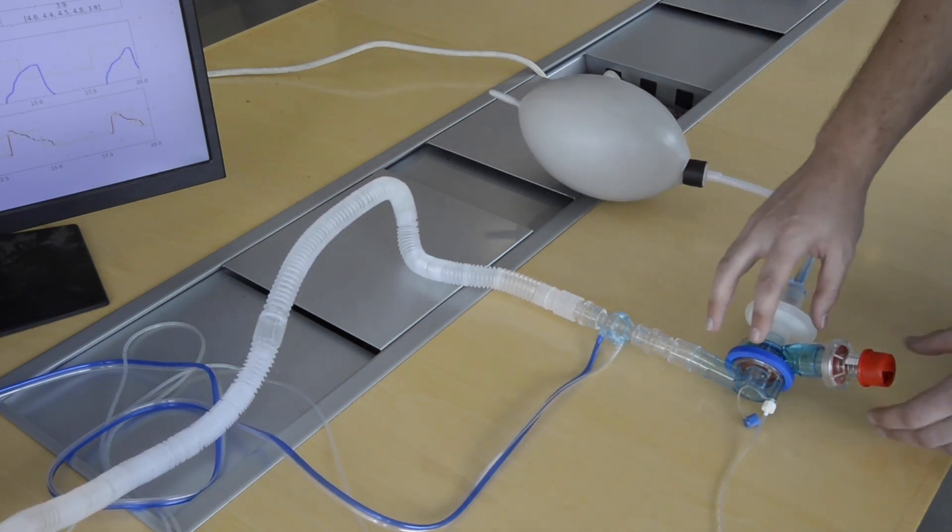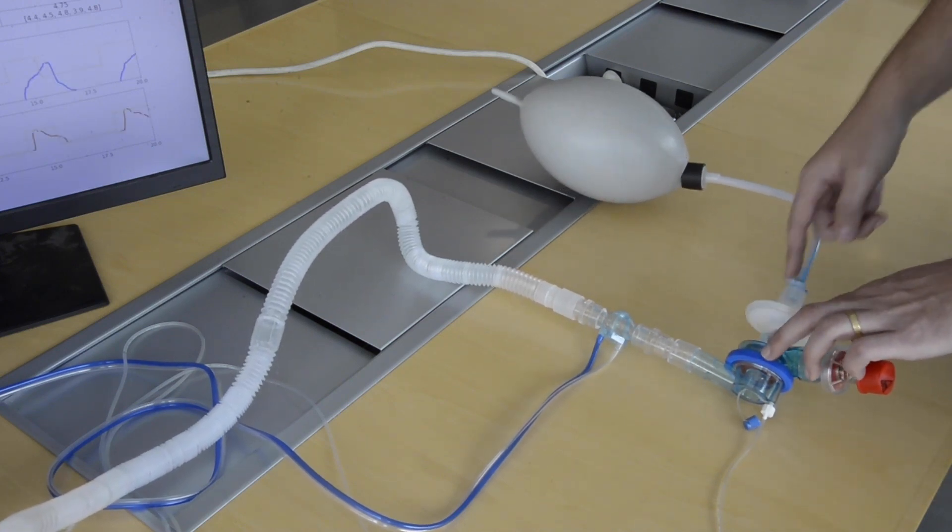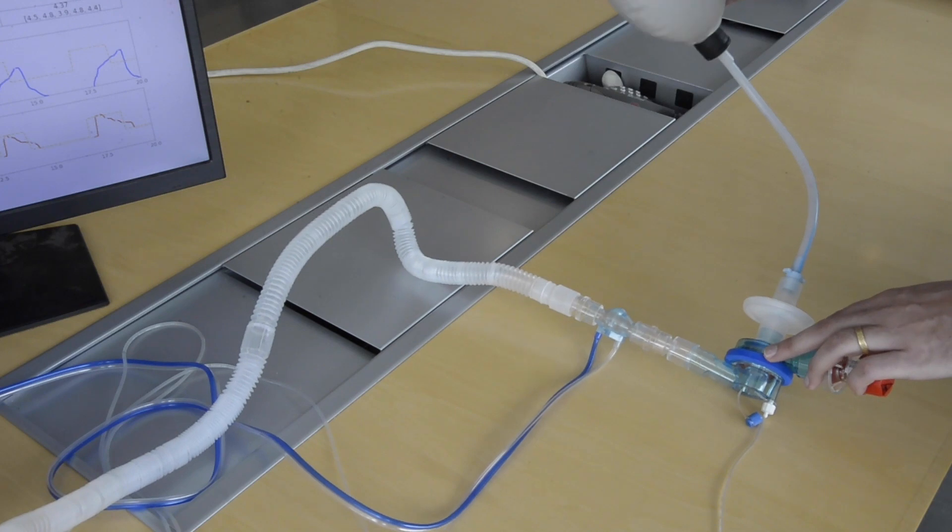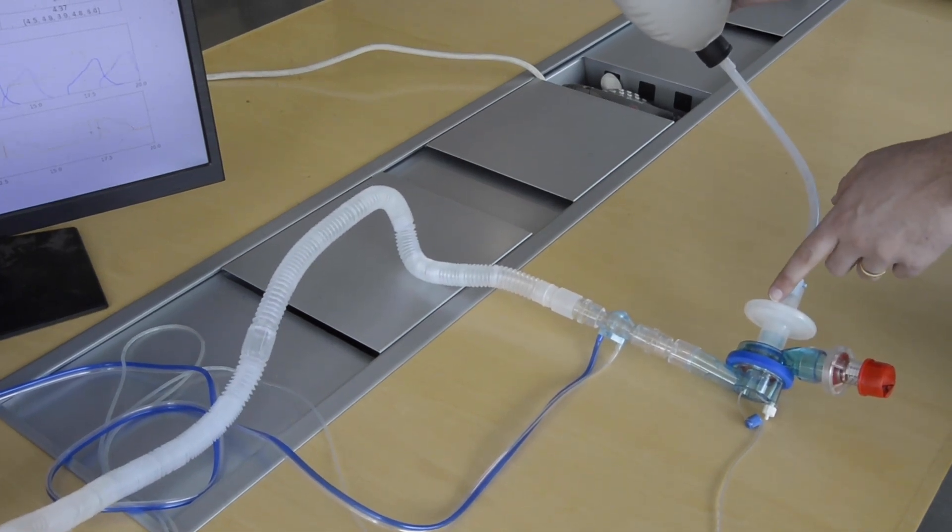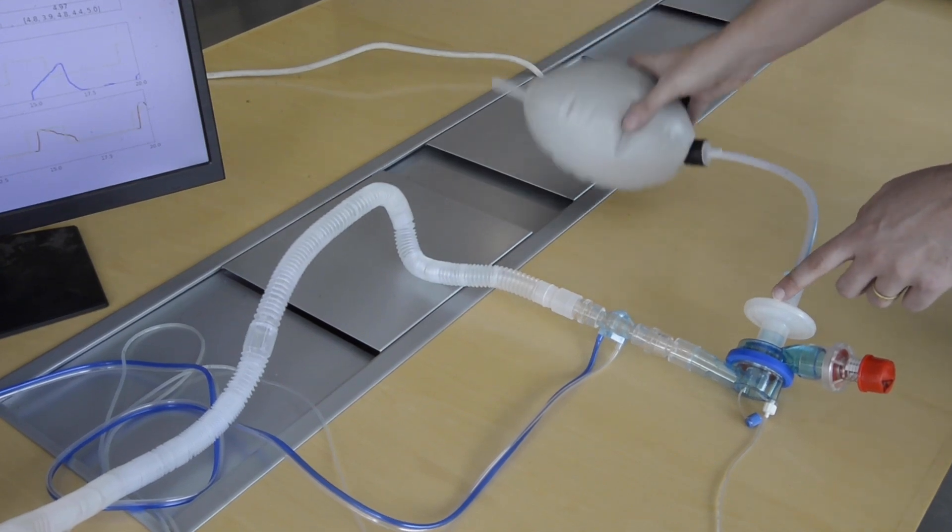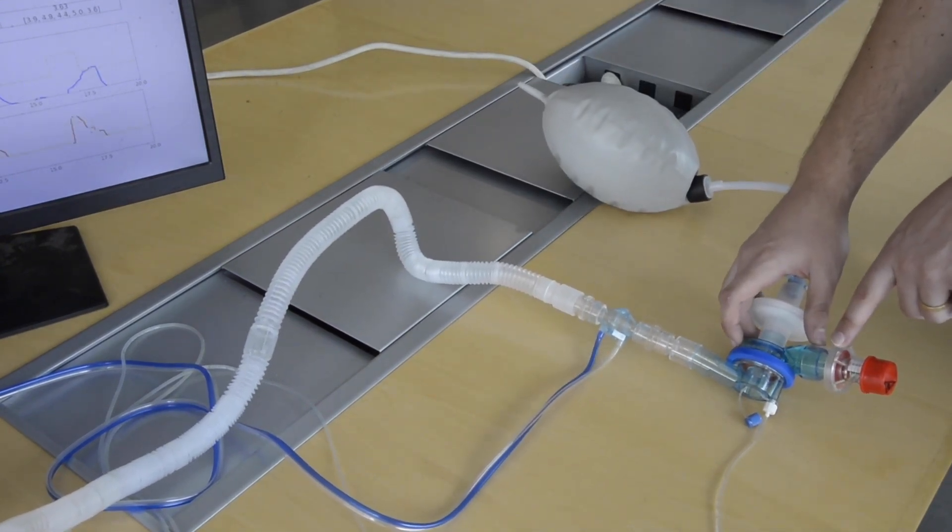This also feeds into a non-rebreathing T-junction which has one direction going to the patient where we have an artificial lung separated by a bacterial viral filter, and then on the expiratory limb is a common PEEP valve.